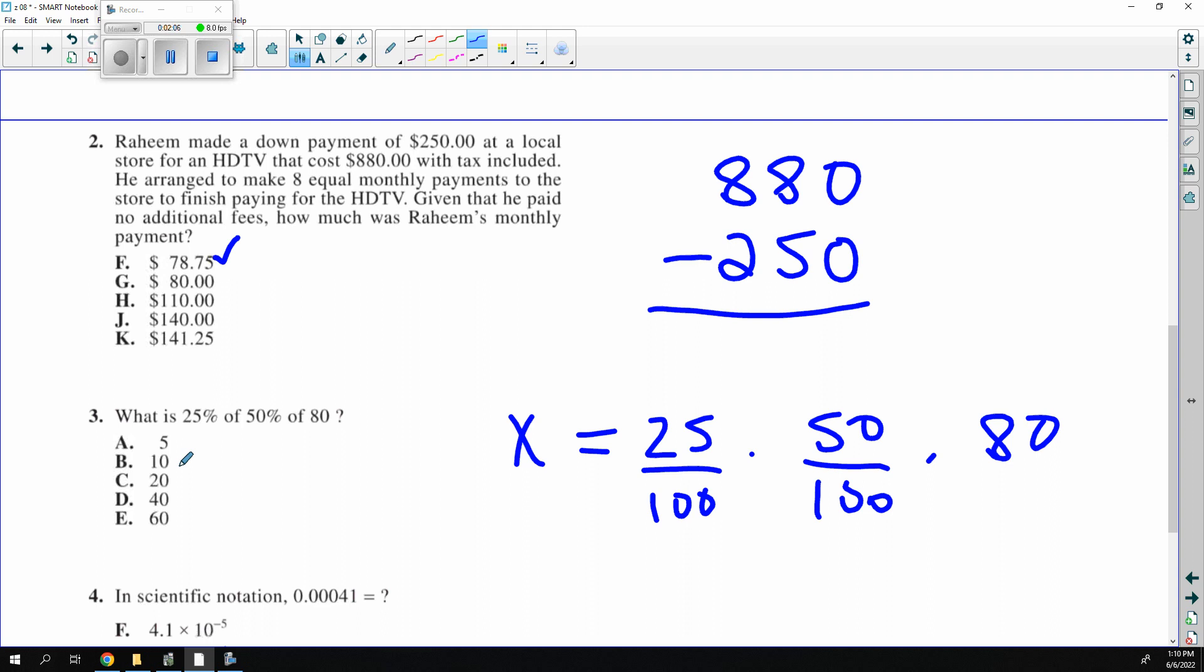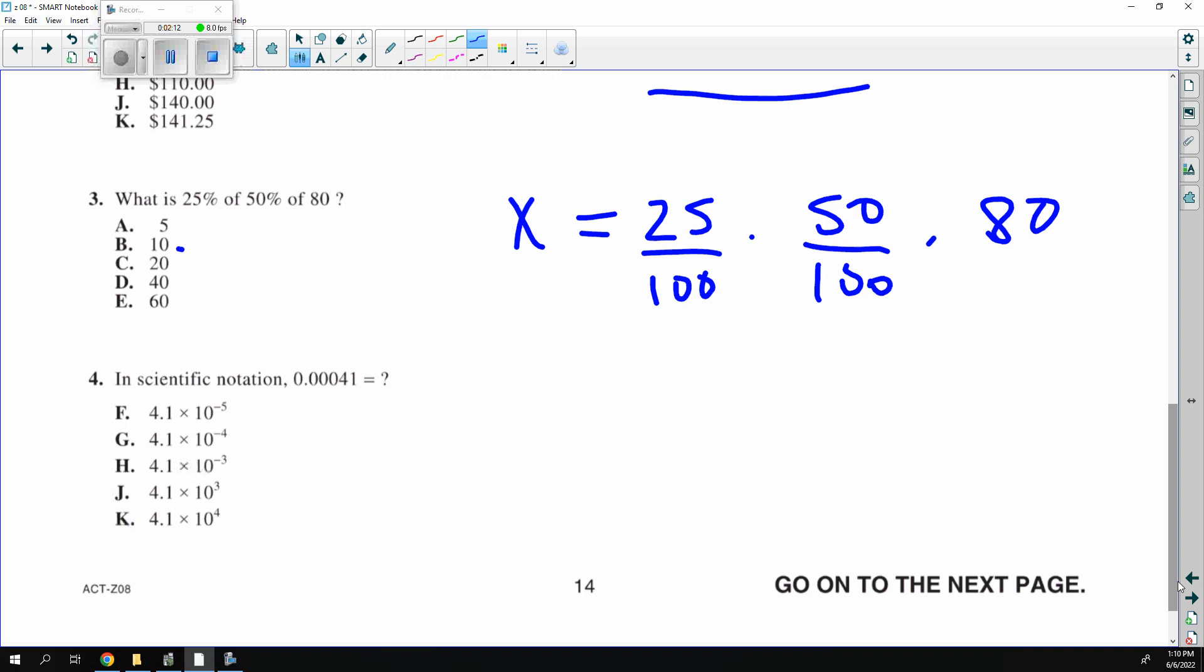For scientific notation, do you remember it? You have to set the number next to the 4.1. And let's see how many we go back. We need three zeros: 1, 2, 3, 4. So it's 4.1 times 10 to the negative 4.